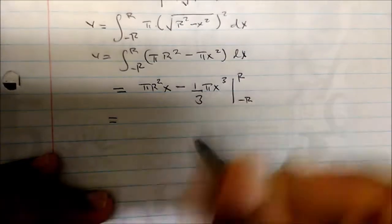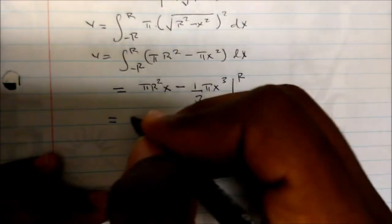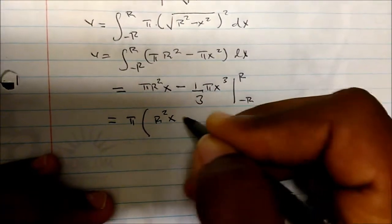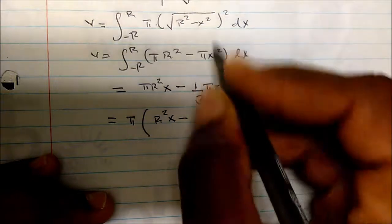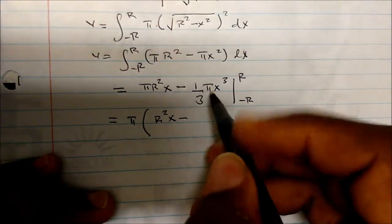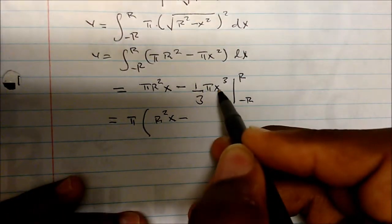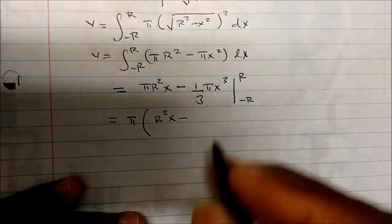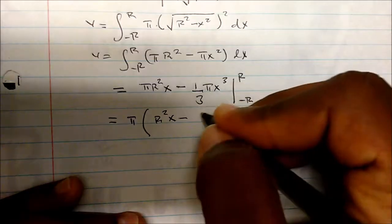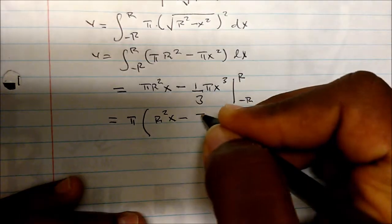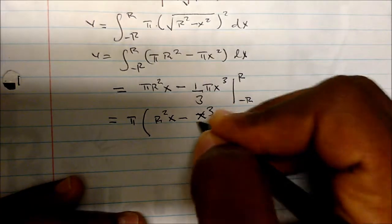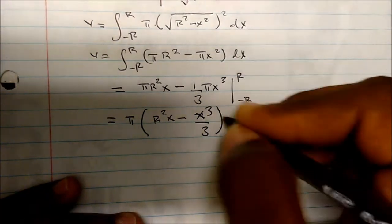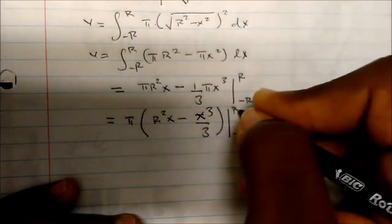I can factor out my π. So this becomes π times r x minus x cubed over 3, all evaluated from negative r to r.